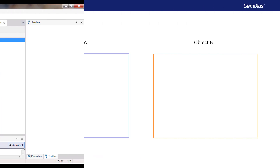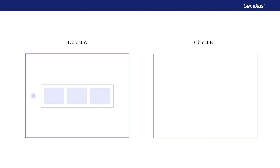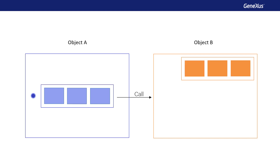So, how do we make an object A call another object B at any given moment, sending it values? Also, object B should be able to load in its internal variables the values sent to it, in order to do something with that information. For an object to be able to receive values — which we call parameters — we must open its rules section and write a PARM rule. This PARM rule declares the parameters that the object can receive and/or return to the caller.